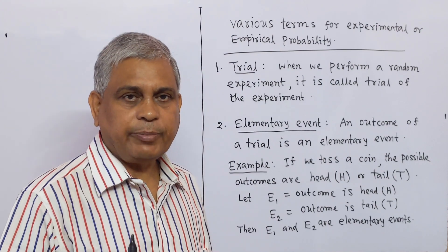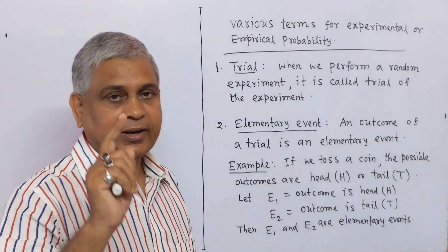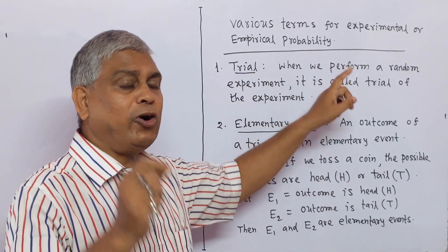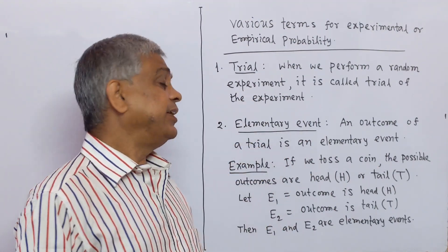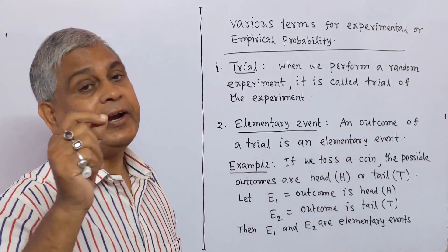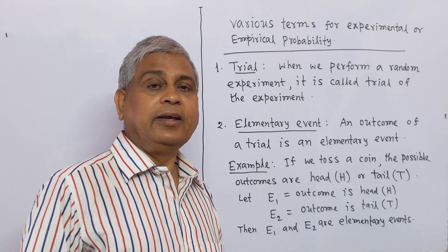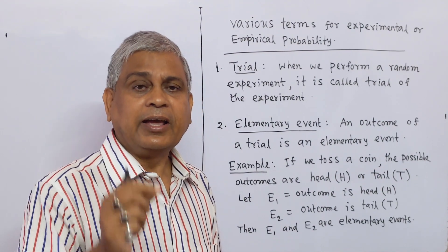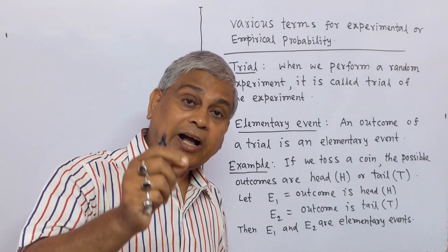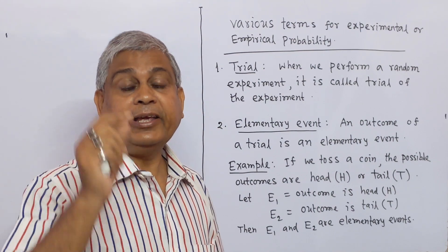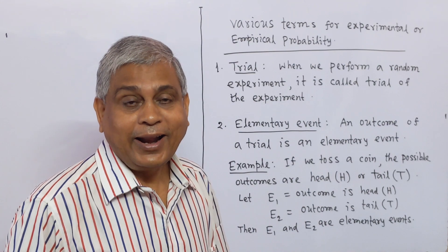Now we will discuss various terms related to experimental or empirical probability. Number 1: trial. When we perform a random experiment, it is called a trial of the experiment. Number 2: elementary event. An outcome of a trial is an elementary event. For example, if we toss a coin, the possible outcomes are head or tail. Let E1 be the outcome head and E2 be the outcome tail. Then E1 and E2 are elementary events.